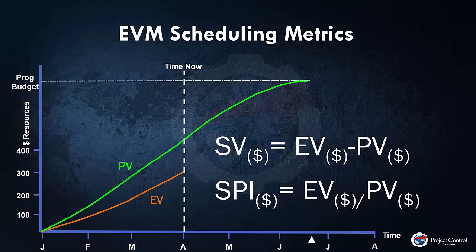Unfortunately, SPI and schedule variance are very often misinterpreted as a time-based indicator — for example, are we early or late and by how much? But in reality, SPI and schedule variance are not time-based indicators; rather they are an indication of the physical status of how much of the work has been accomplished as compared to the planned work. That's one of the reasons why EVM scheduling metrics are not used to estimate the project completion date, because the units are in measure of currency, not time.